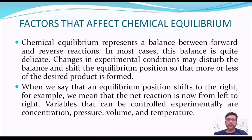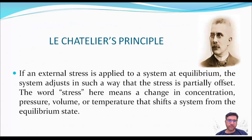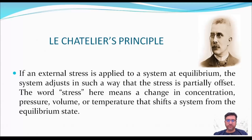Factors that affect chemical equilibrium: Changes in experimental conditions may disturb the balance and shift the equilibrium. The factors which affect equilibrium are concentration, pressure, volume, and temperature. According to Le Chatelier's principle, if an external stress is applied to a system at equilibrium, the system adjusts in such a way that the stress is partially offset. Here, stress means pressure, concentration, volume, or temperature — anything that shifts a system from its equilibrium state.